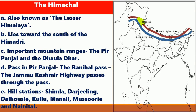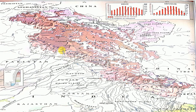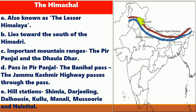The Himachal range is also known as the Lesser Himalaya. It lies towards the south of the Himadri. The important mountain ranges found here are the Pirpanjal and the Dauladhar. There is a pass in the Pirpanjal range called the Banihal Pass. The Jammu Kashmir Highway passes through this pass.